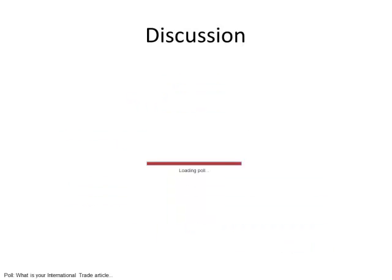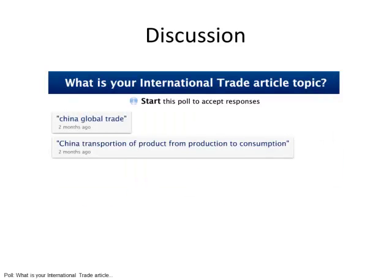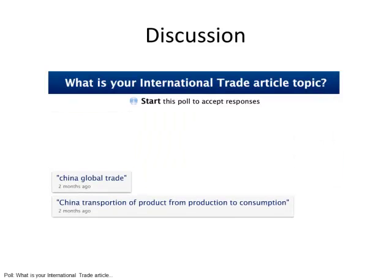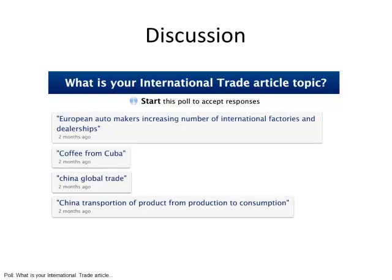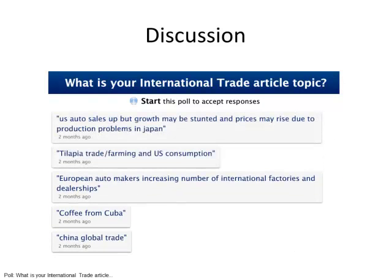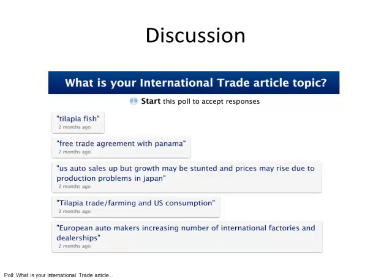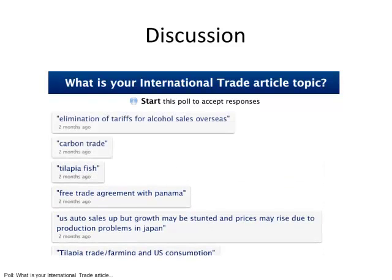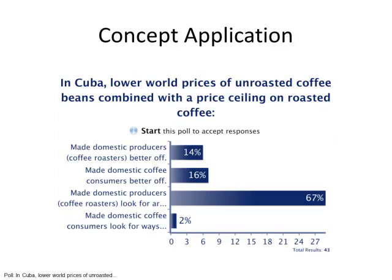A different example — less conceptual, more concrete — was their international trade article topic. Again, they got to see as a class the responses coming in and discussed several different ones, one of which was the issue in Cuba of lower world prices for unroasted coffee but a price ceiling on roasted coffee. This became not only a quiz question but also an application question on a midterm.